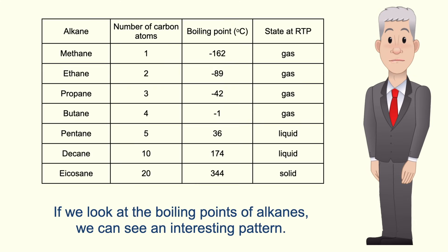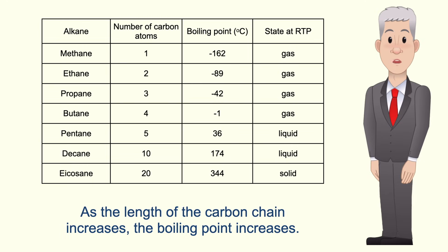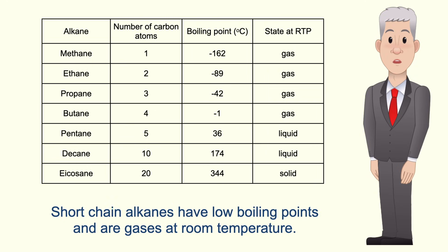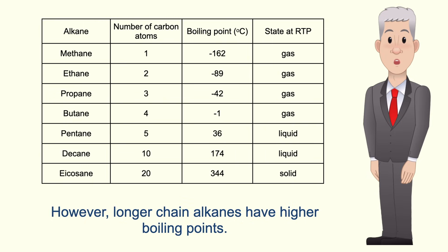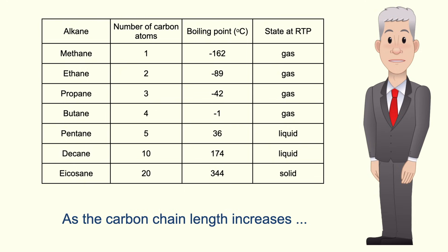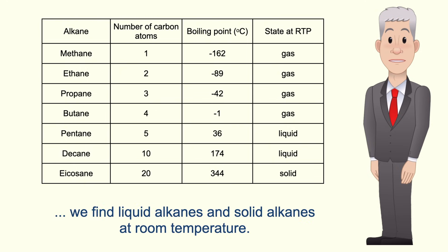If we look at the boiling points of alkanes we can see an interesting pattern. As the length of the carbon chain increases, the boiling point increases. Short chain alkanes have low boiling points and are gases at room temperature. However, longer chain alkanes have higher boiling points, and as the carbon chain length increases we find liquid alkanes and solid alkanes at room temperature.